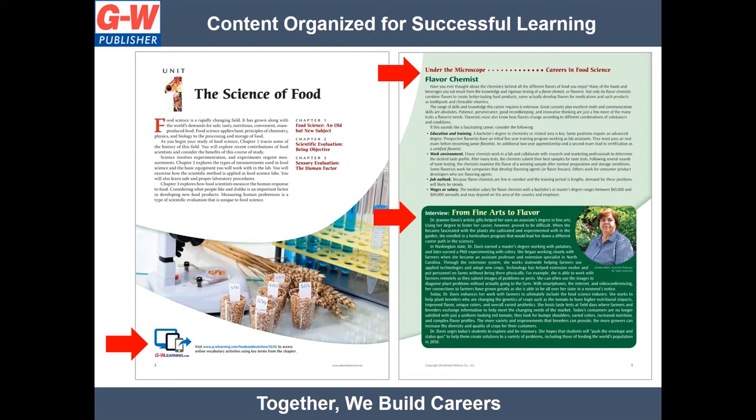Each unit opens with a GW Learning Companion Website Activity Icon, which identifies related content available on the GW Learning Companion Website. Under the Microscope: Careers in Food Science features explore careers in food science, as well as information on education, training, work environment, job outlook, and income. Unit interviews introduce students to real-life professionals who have made a career related to food science.